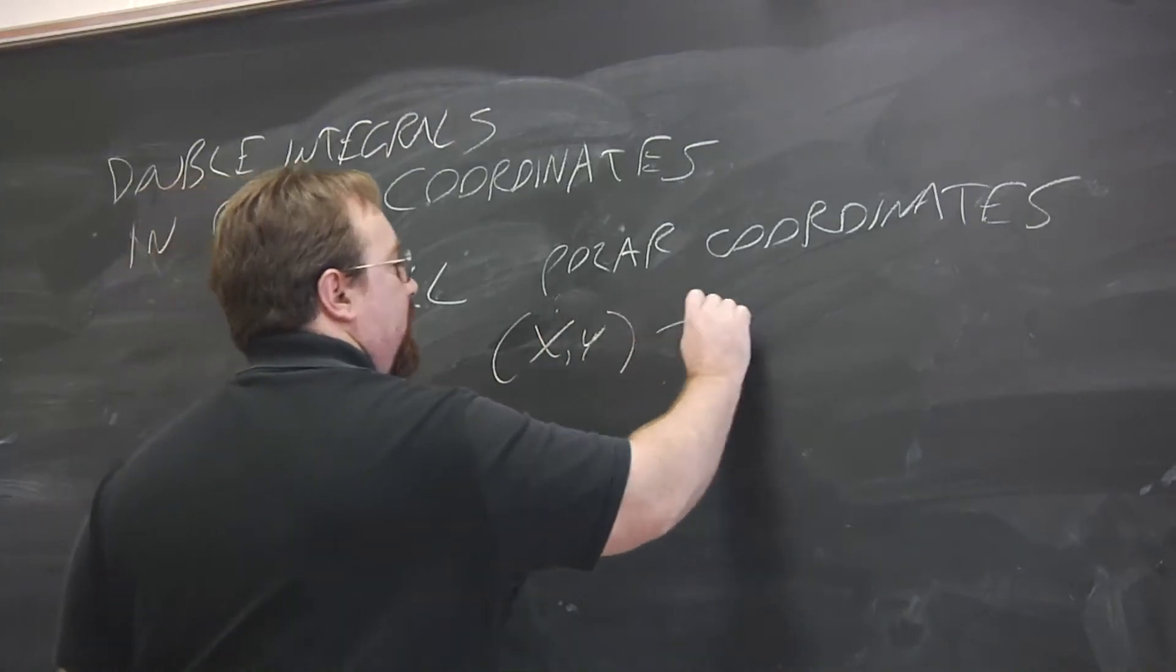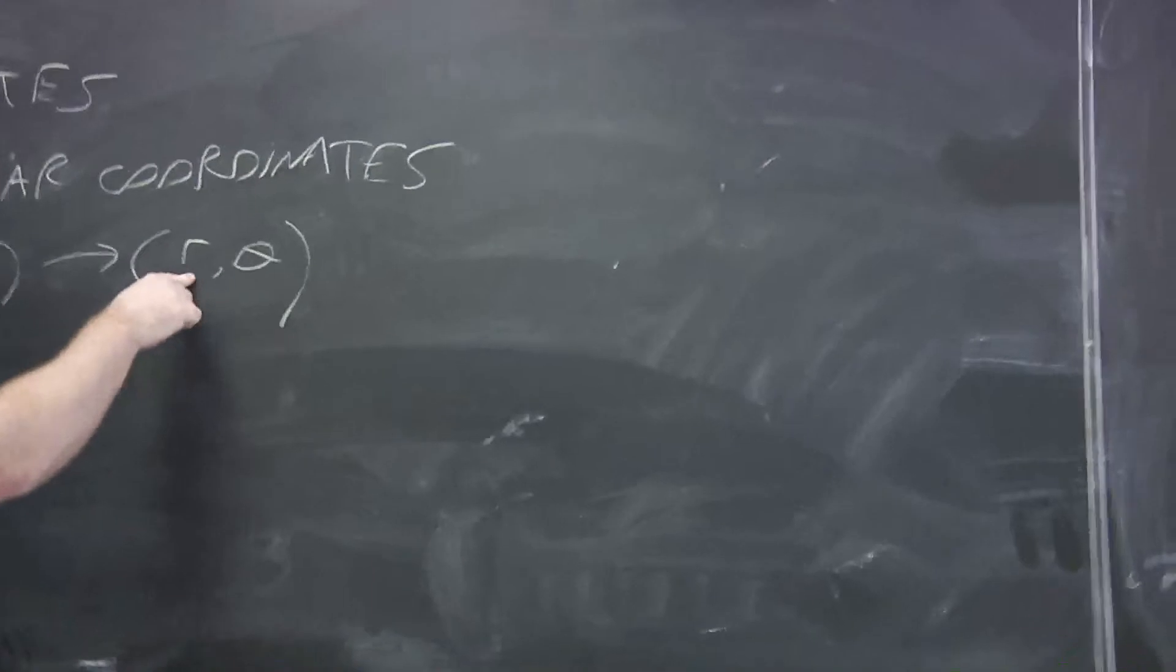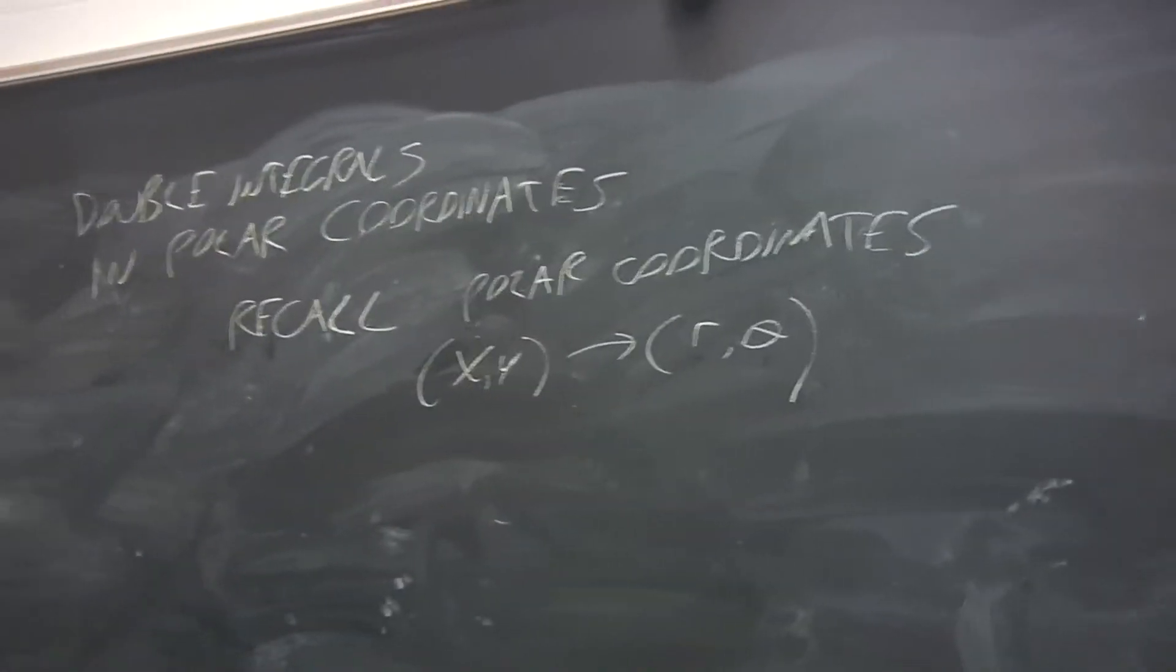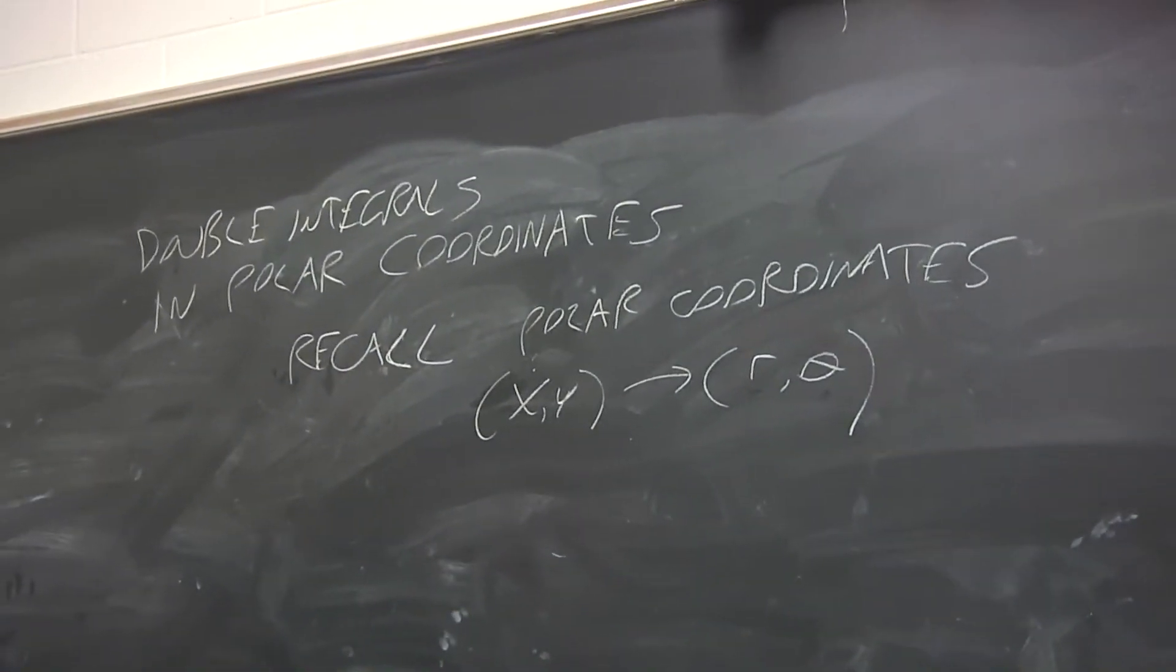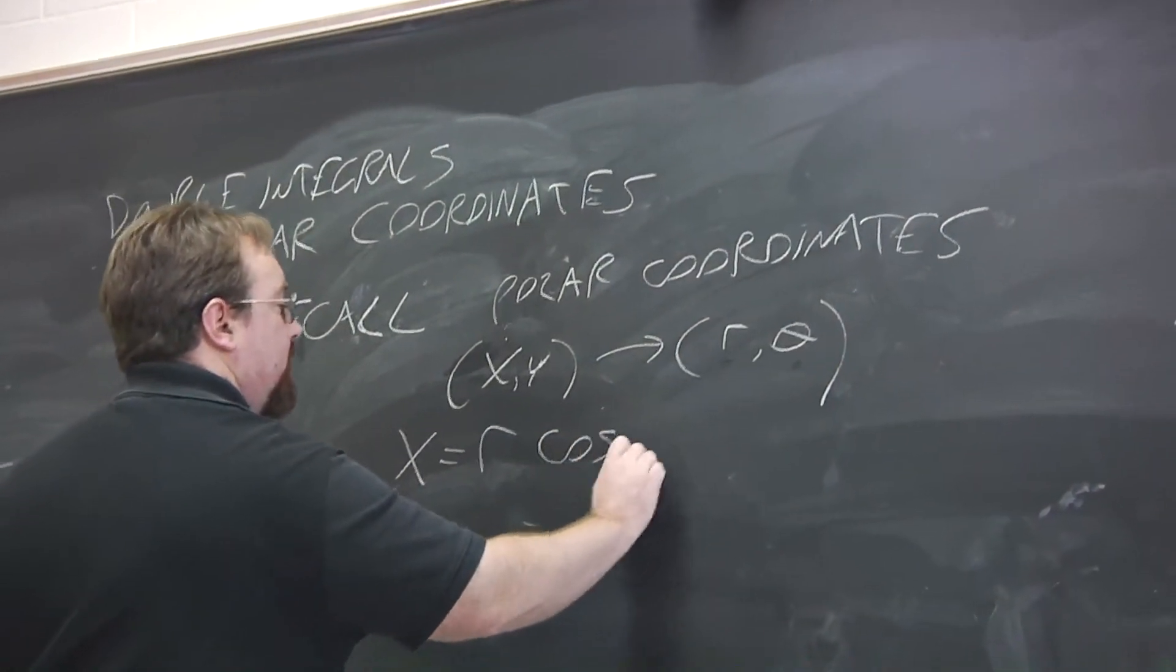To convert between x, y and r, theta, distance from the origin and the angle that the point makes with the positive x-axis, we have these relationships between the two.